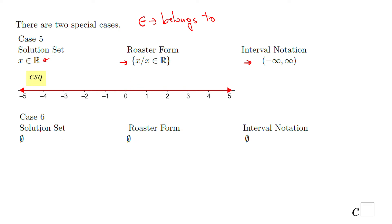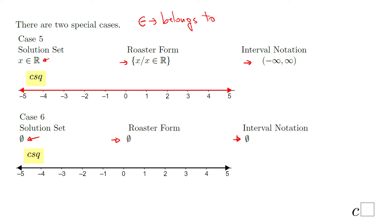Case six, the second special case: no solution, empty set. This is the meaning — empty set, no solution. In interval notation, you just put the empty set symbol, and the graph shows nothing shaded. It's just a number line without any shading, points, or anything like that.